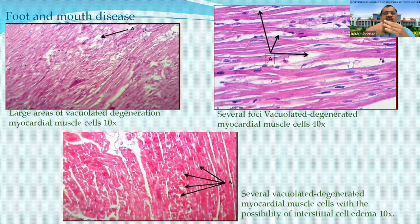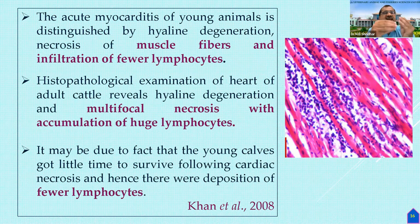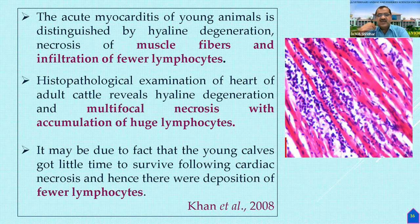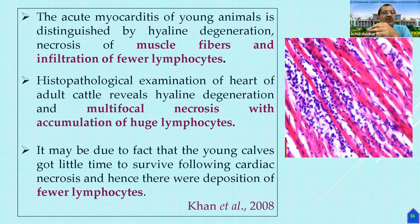Acute myocarditis is distinguished by hyaline degeneration of muscle fibers and infiltration of lymphocytes as shown in this slide. Histopathological examination of adult cattle hearts reveals hyaline degeneration, and death in adult cattle is attributed to myocardial failure with multifocal necrosis and accumulation of lymphocytes. We have to treat these cows as early and as fast as possible.